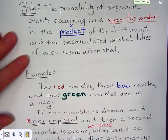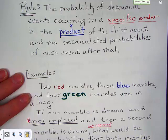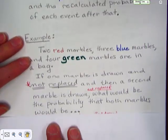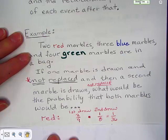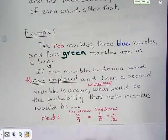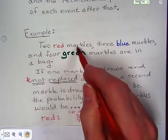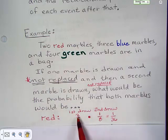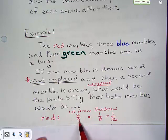What would be the probability that both marbles would be red? So, we start, we look. Okay, we've got red, two red marbles out of nine. So, the very first draw, the probability is what you would expect, two out of nine.